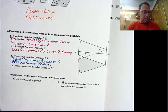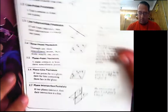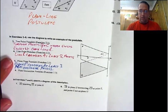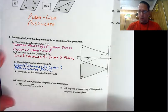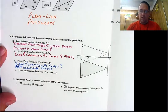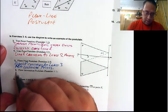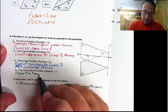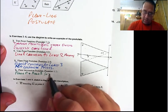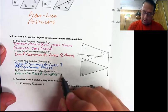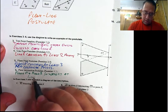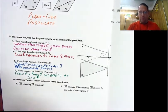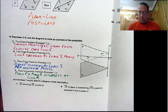The last one is the plane-intersection postulate. It says if two planes intersect, then their intersection is a line. We need two planes that intersect in a line, and that would be plane P and plane Q intersecting at line K. So we will say: plane P and plane Q intersect at line K. Basically, we just take these and put them in sentences — not a big deal.